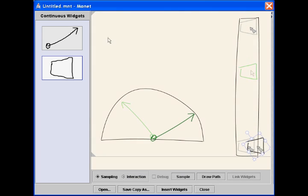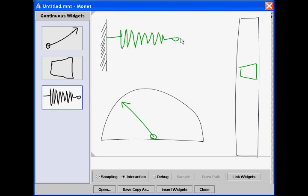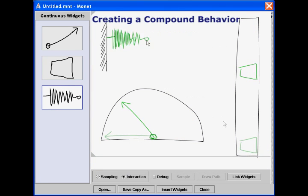Then the designer adds a spring. Based on the behaviors of individual widgets, the designer clicks the toggle button Link Widgets to start demonstrating a compound behavior.